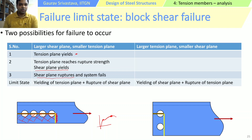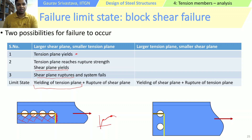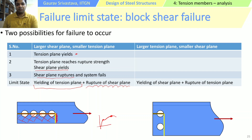In this sequence of events, the limit state is going to be yielding of the tension plane — we want to prevent yielding of the tension plane. If we are able to prevent yielding of the tension plane, then the yielding and subsequent rupture of the shear plane will not happen and this block shear mode can be prevented. The other condition is we want to prevent rupture of the shear plane: even if yielding of the tension plane occurs, if rupture of the shear plane does not happen, the block shear failure mode can also be avoided.